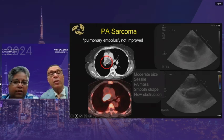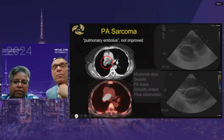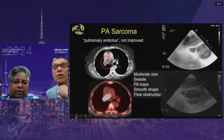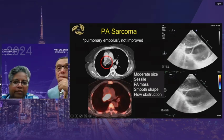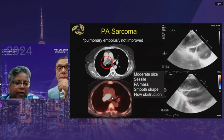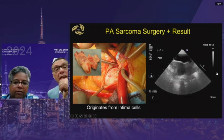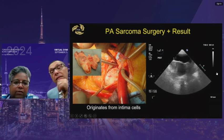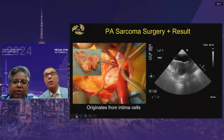A pulmonary artery sarcoma case: this patient was initially treated for months as a pulmonary embolus. PET scan is useful here. Echo shows the tumor filling the entire right pulmonary artery with very little flow visible. Pulmonary artery sarcomas require resection of the affected pulmonary artery segment and involved structures, reconstructed with a Dacron graft.